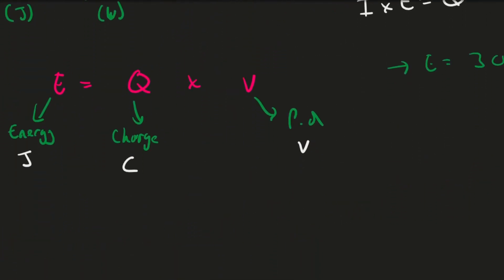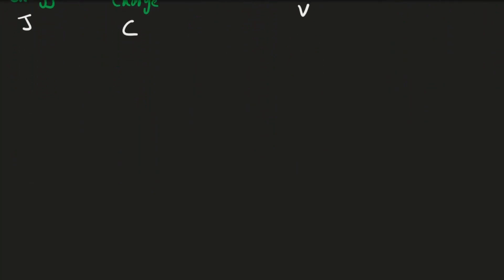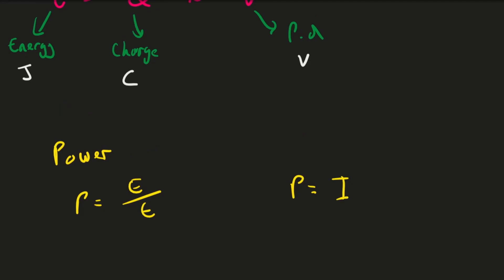We can also look at power. We have P = E/t (power equals energy transferred divided by time), and a second equation: P = IV (power equals current multiplied by potential difference). Using these two equations, you can see that the power of an appliance depends on energy transferred per unit time, or on the potential difference and current through the component.